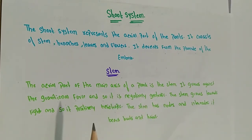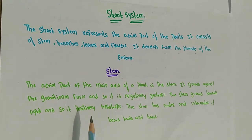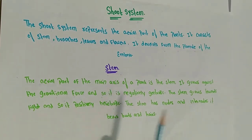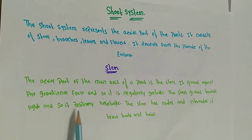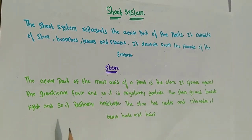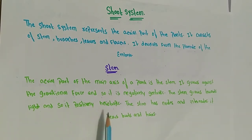Geotropic refers to the directional growth of an organism in response to gravity. Roots grow downwards into the soil, so they are positively geotropic. The stem grows upwards, so it is negatively geotropic. The stem also grows towards light, so it is positively heliotropic — meaning the stem grows in the direction of the sun.